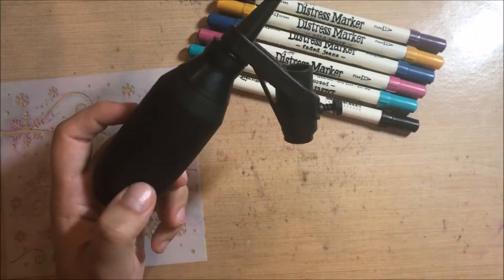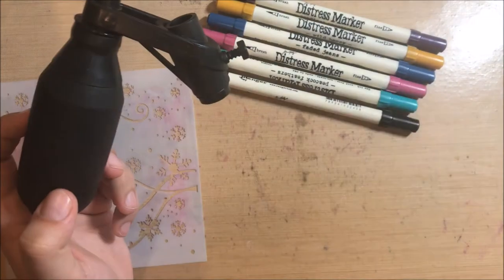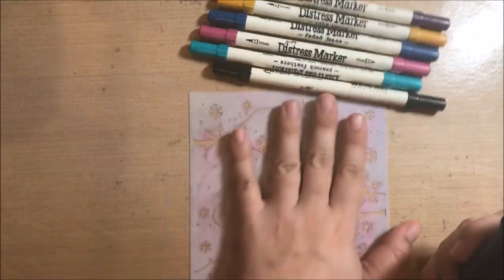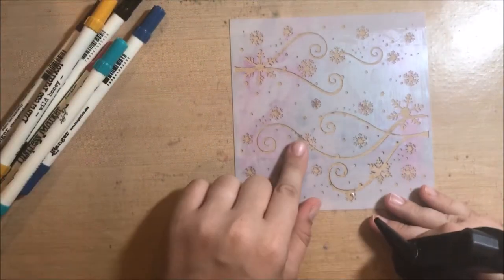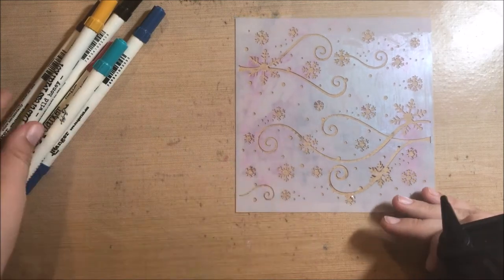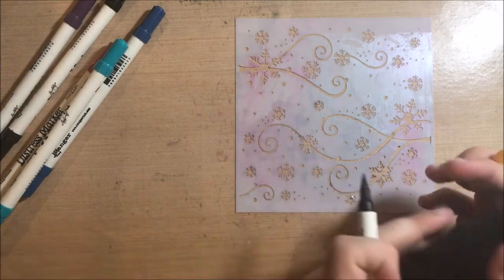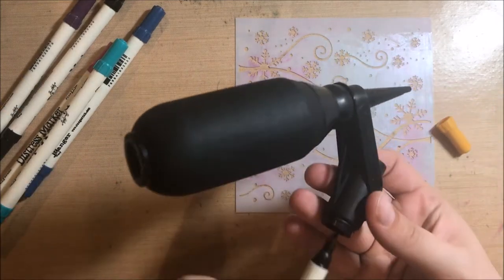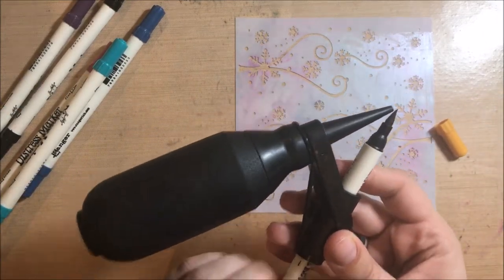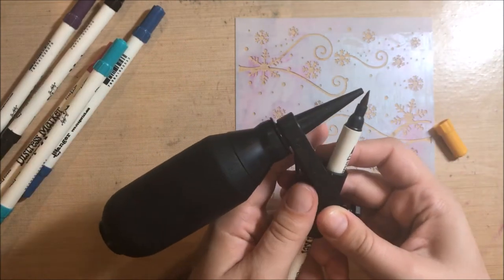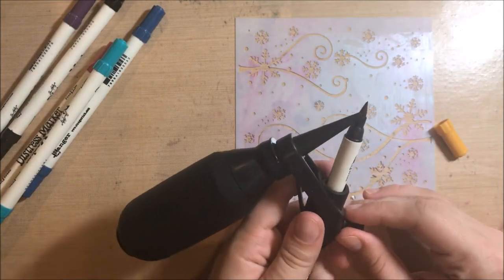So I picked out a few distress markers that I had on hand. Any marker pretty much will fit in this little thing. You can actually take out the little center piece and use bigger markers. I've used my Spectrum Aquas. I think you can use Copic markers, but I don't know if I've tried them or not. But I think they're smaller than the Spectrum Aquas anyway, so they should fit.